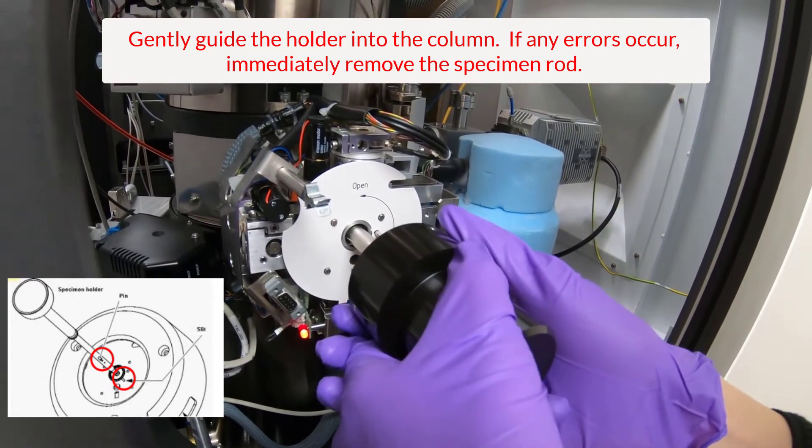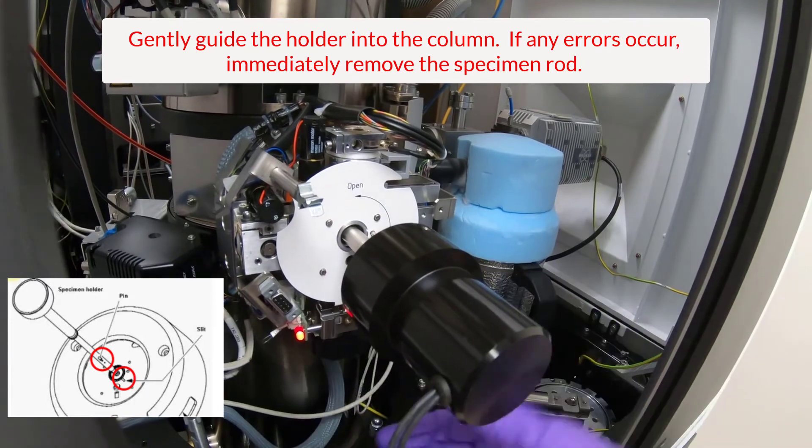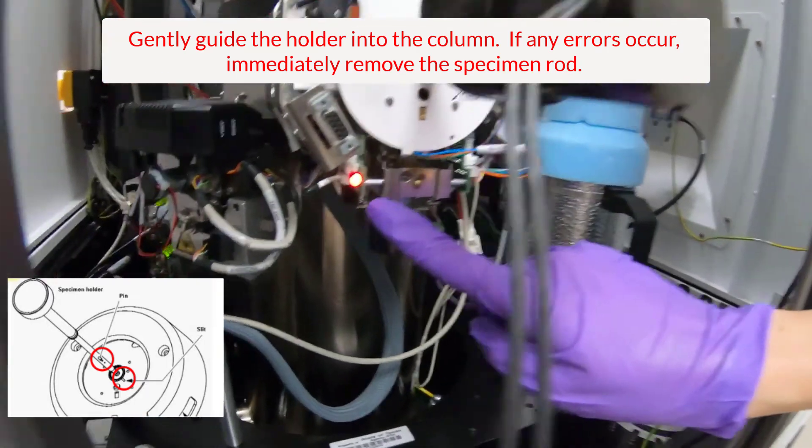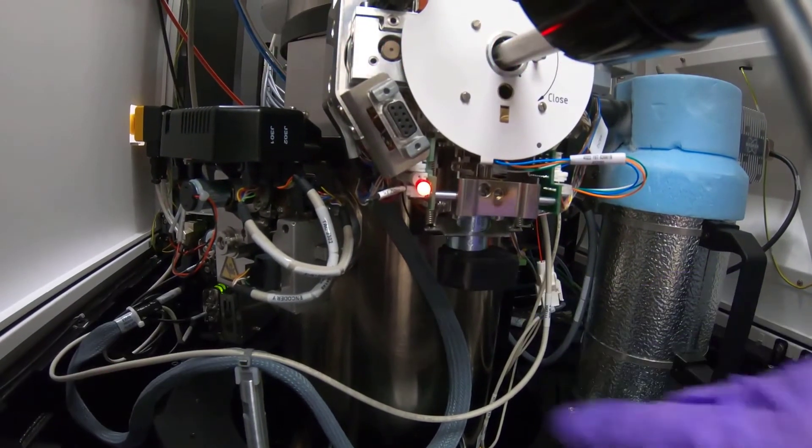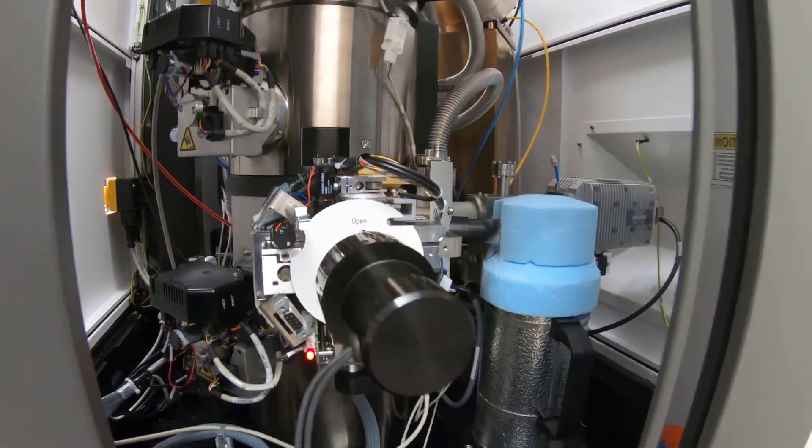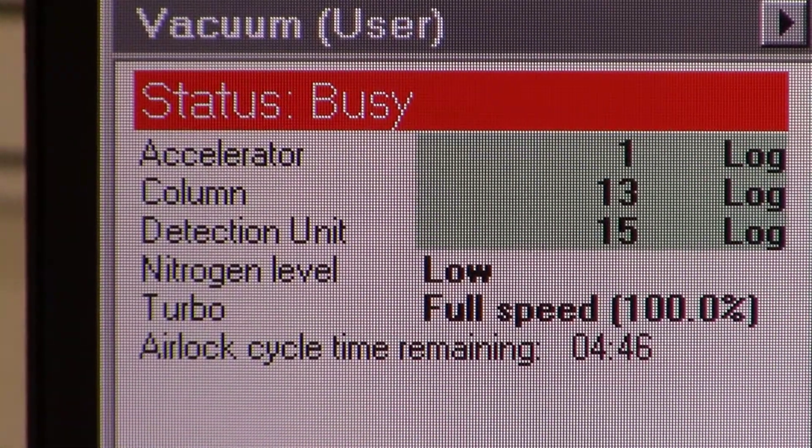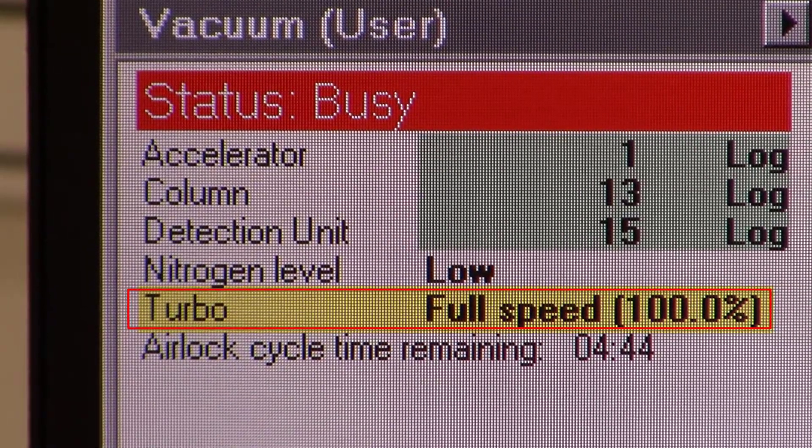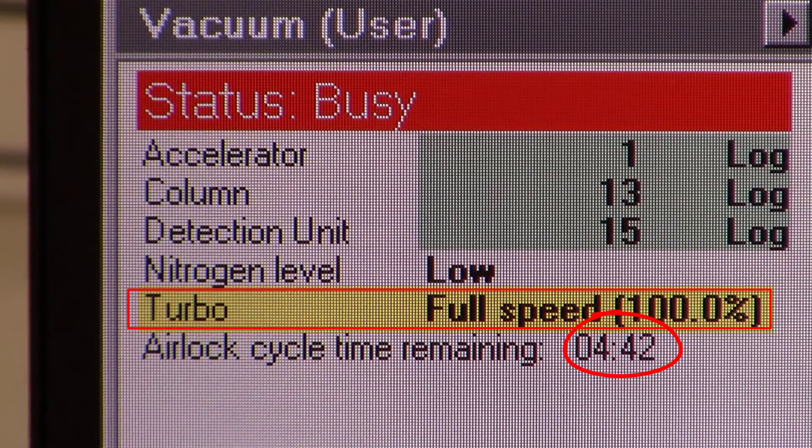You will be able to feel if the pin is lined up correctly inside. Once it is, gently push to seat. The red LED light will turn on and the turbo will ramp up. Once the turbo is at 100%, a 5-minute countdown will appear in the user interface.